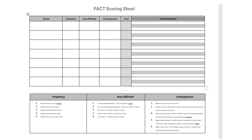You also want to make notes and comments on your thought process for each score — write down why you chose what you did. That way, when you go back through it, you can look at those notes and refine your scores each time.